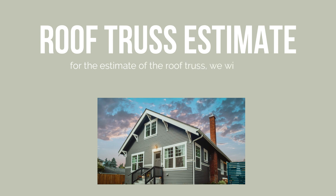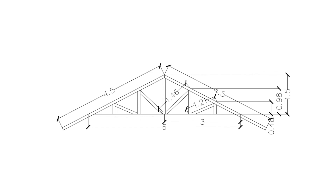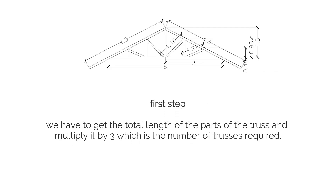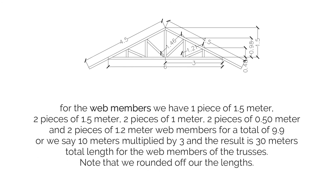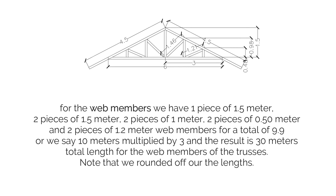For the estimate of the roof truss, using a sample gable roof truss that requires 3 whole trusses: first procedure, get the total length of the parts and multiply by 3. For the top cords, 4.5 plus 4.5 equals 9 meters, multiplied by 3 gives 27 meters. For the bottom cord, 6 multiplied by 3 gives 18 meters. For the web members, we have 1 piece of 1.5 meter, 2 pieces of 1.5 meter, 2 pieces of 1 meter, 2 pieces of 0.50 meter, and 2 pieces of 1.2 meter, totaling 9.9 or approximately 10 meters, multiplied by 3 gives 30 meters.